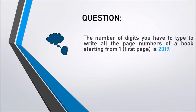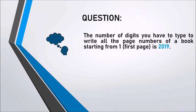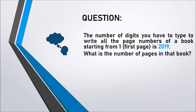Question: The number of digits you have to type to write all the page numbers of a book starting from 1 is 2019. What is the number of pages in that book?